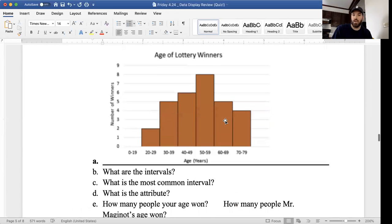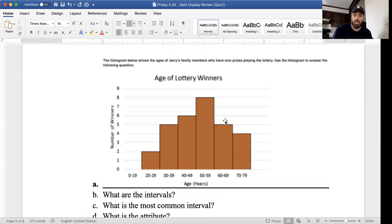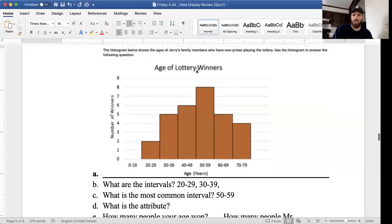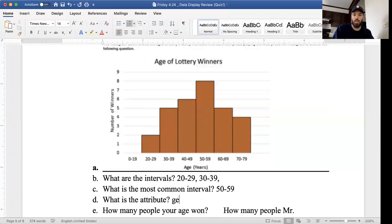Last thing we did was histograms. I could answer a bunch of questions on this histogram. The first one says, what are the intervals? We have 20 to 29, we have 30 to 39, etc. That's a question you'd be able to answer. What's the most common interval? Our biggest one right here is 8, it's 50 to 59. He's asking about the intervals, so the most common is 50 to 59. What's the attribute? What are we talking about here? We're talking about the age of lottery winners.